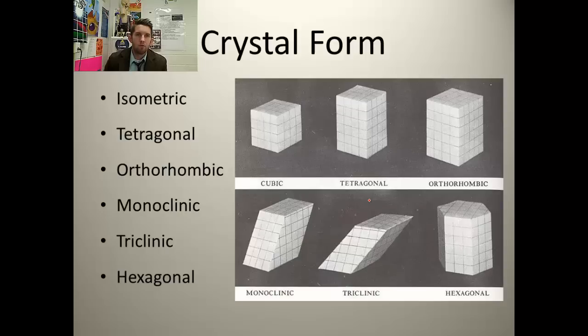And its crystal form. If we look at them, our crystal forms, we have isometric, which is just a cube. Equal sides. All the sides are equal. Tetragonal. It means that there are three axes. They're all perpendicular to one another. Two are equal in length. You can see equal, equal.